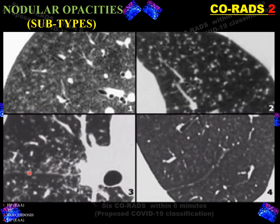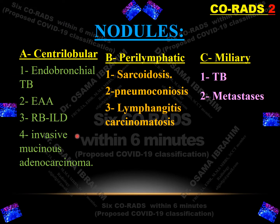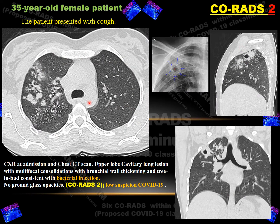If there are nodular opacities like peribronchial or perivascular nodules as in sarcoidosis, or multiple nodules with random distributions, we consider it also CO-RADS 2. These are the differential diagnoses of nodular opacity in the lung. There is another presentation in this channel talking in detail about nodules and how to differentiate them. A 35-year-old female presenting with cough showing multifocal areas of consolidation with a tree-in-bud appearance — this appearance classifies it as CO-RADS 2, low suspicion of COVID-19.